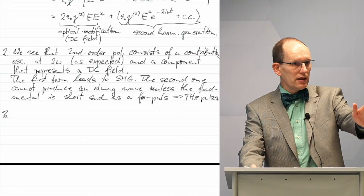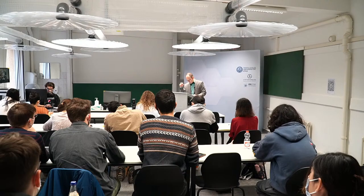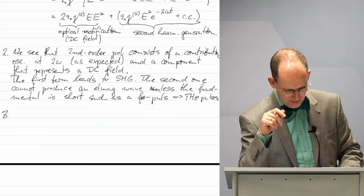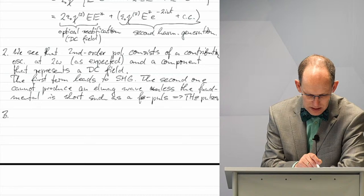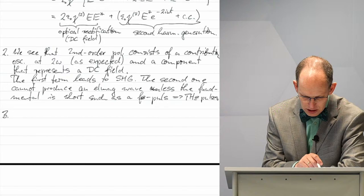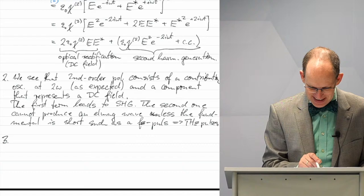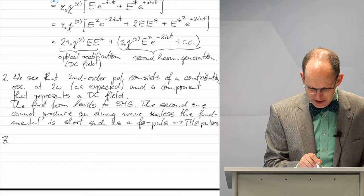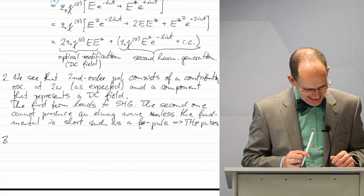What do you think about the efficiency of second harmonic generation? If we have 10 watts of infrared light and send it through a nonlinear crystal, how much can be converted to green light - 10%, 50%, 100%? Under proper, idealized conditions, second harmonic generation can have an efficiency close to 100%. We will calculate that at some point.